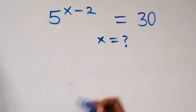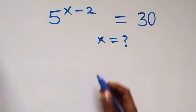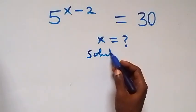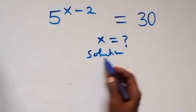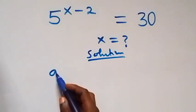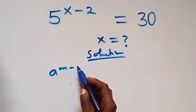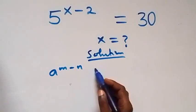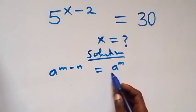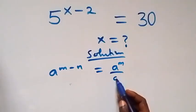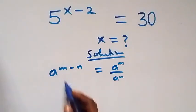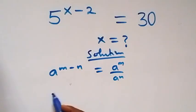Hello, you are welcome. How to solve this nice exponential problem. From the law of indices, when we have a raised to power m minus n, this is the same thing as a raised to power m over a raised to power n. That is what we have here.